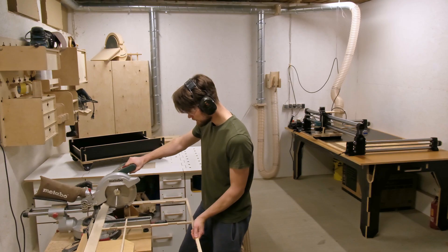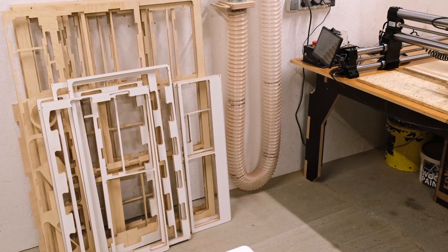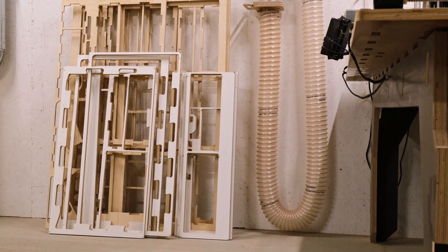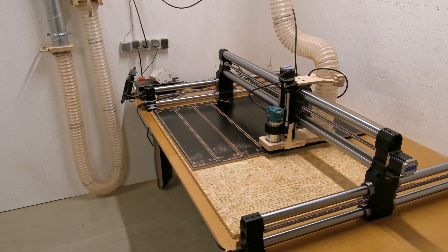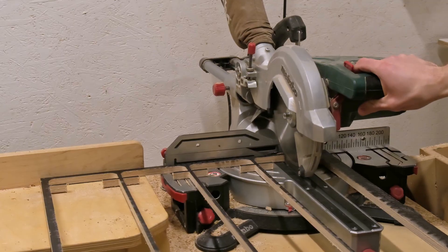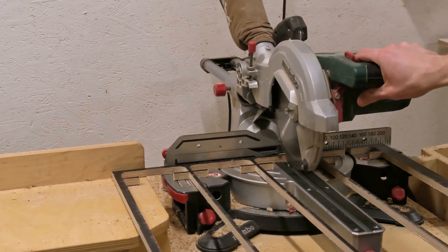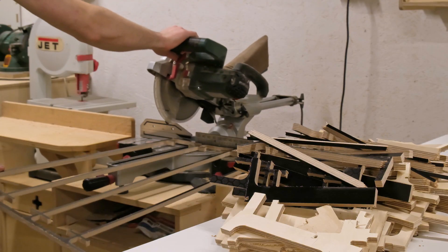Meanwhile, we also need to cut down the existing offcuts into smaller pieces for the furnace. While the CNC does its job, I am using the miter saw to slice the offcuts. It is not the perfect method, but it works just fine.